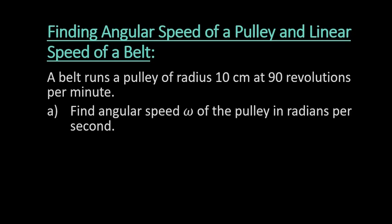So a belt runs a pulley of radius 10 centimeters at 90 revolutions per minute. So right now it's telling us that if I were to take a point on a circle, that it rotates around the circle. So if I have my circle here, okay.